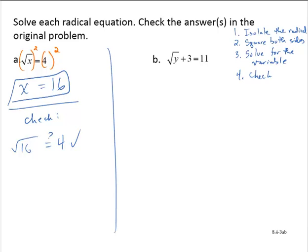Exercise b: the square root of y plus 3 equals 11. Is the radical isolated? It's not, so let's isolate the radical first. I'll subtract 3 from both sides, yielding the square root of y equals 8. Now I will square both sides, yielding y equals 64.